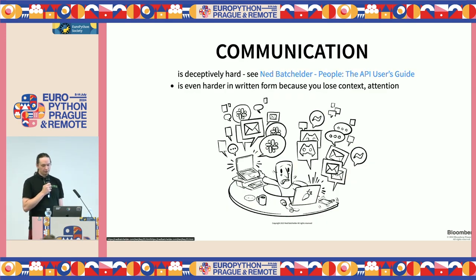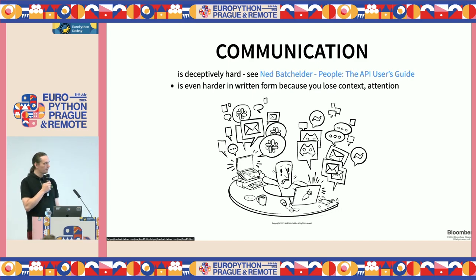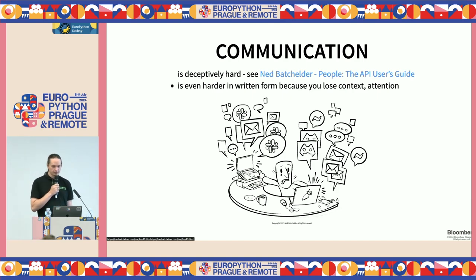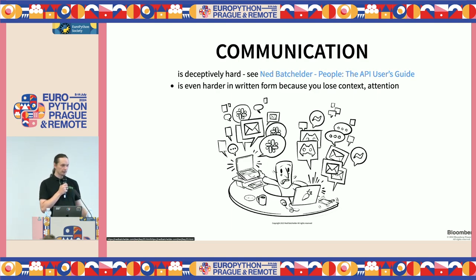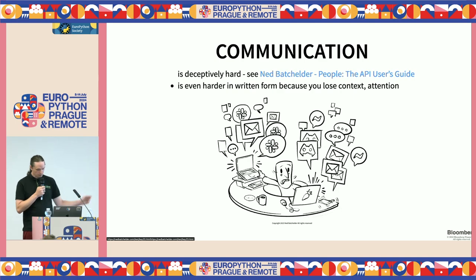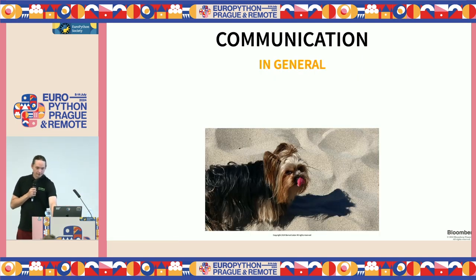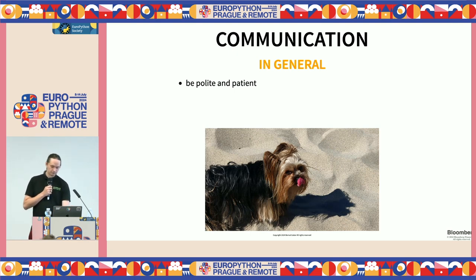Written communication is even harder because when you write something down in an issue tracker or on chat, you lose a lot of context. It also means you don't have the exclusive attention of the person you're speaking with — they may be juggling 20 other things and have 15 seconds to quickly look at your issue. So the general key takeaway is: be polite and patient.